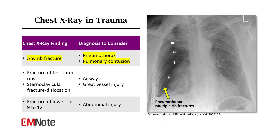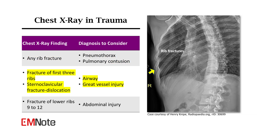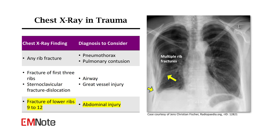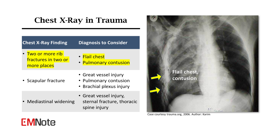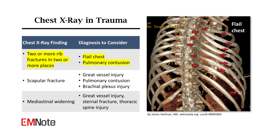If any rib fracture is present, investigate for potential pneumothorax or pulmonary contusion. In the event of a fracture involving the first three ribs or sternoclavicular dislocation, airway or great vessel injury should be suspected. Fractures of the lower ribs, 9th to 12th, may indicate an associated abdominal injury. The presence of two or more rib fractures in multiple locations raises concern for flail chest or pulmonary contusion.